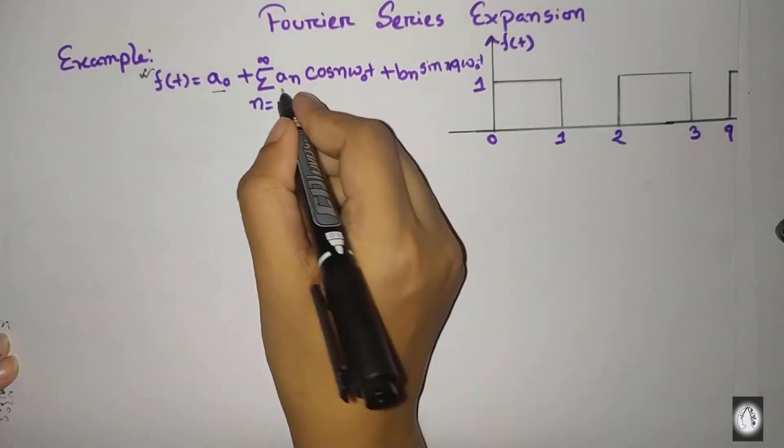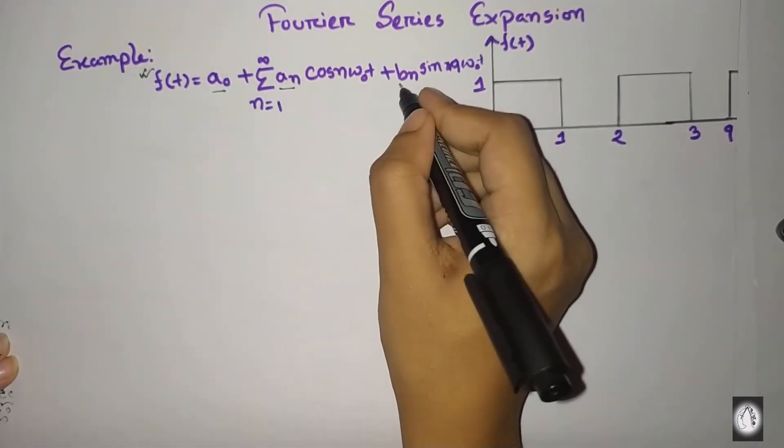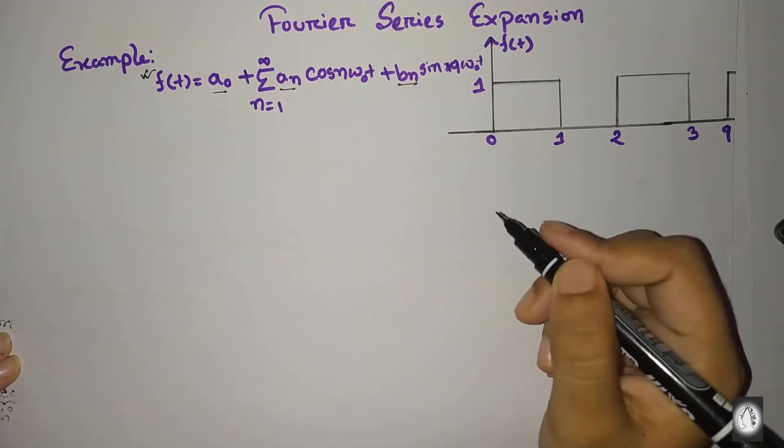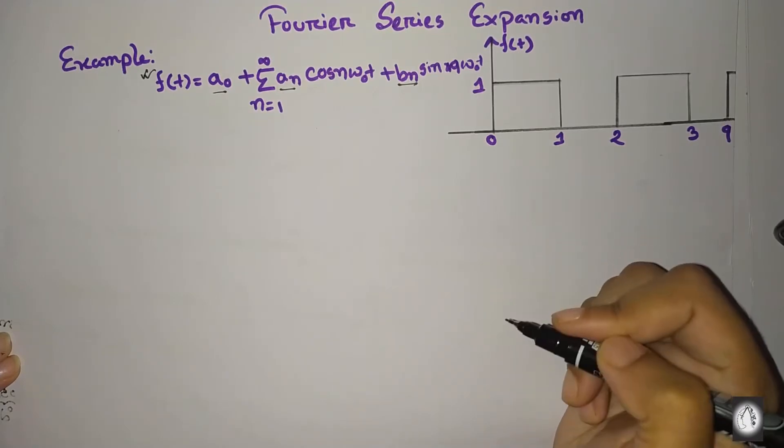The Fourier constants are A₀, aₙ, and bₙ — these are the Fourier constant values.